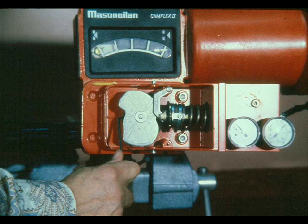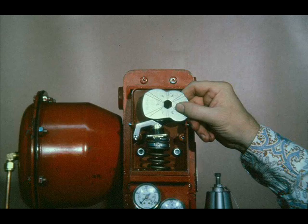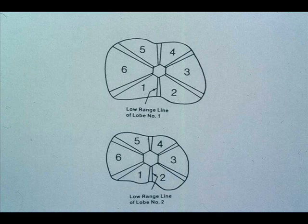The same 4600 positioner operates on both the Camflex II and Sigma F actuators, the only difference being there are two different cams — one for the Camflex and one for the Sigma F. Make sure you have the right cam; the part number is stamped on each. Each cam has two sides: one side has lobes 1 through 6 and the other side has lobes 7 through 12. The instruction manual gives examples showing the low range line of the lobes, which is the line on the cam that is aligned to the line on the positioner case for mounting the cam.